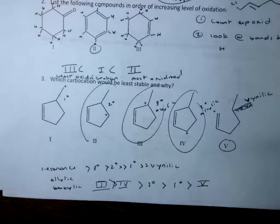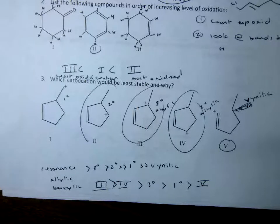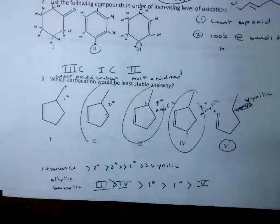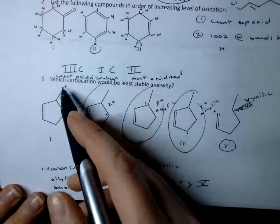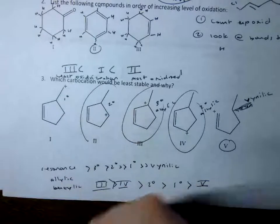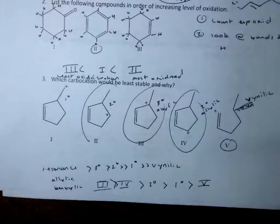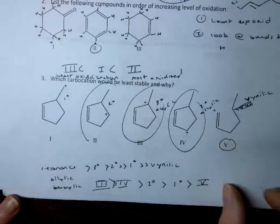When I'm comparing two with resonance, I still go by tertiary, secondary, primary, because that still lends more stabilization. Carbocation stabilization is all about adding electron density — resonance adds electron density, but so does having extra carbons. That's why that order holds.